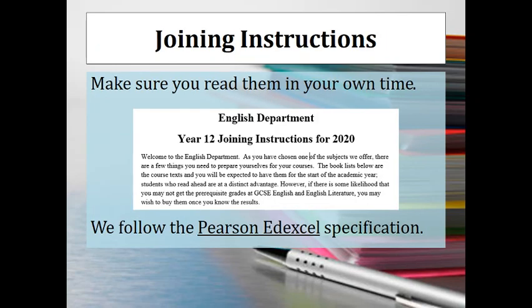Part of your pack for induction will be some joining instructions. Those joining instructions give you a list of the texts you're going to be studying for English Language and Literature, and you might want to think about purchasing them as soon as possible so you can get ahead with reading. If you're not sure about your grade, you might want to wait before purchasing, but if you're confident you'll get the joining requirements — two grade fives for English — you might want to buy them ahead of time.